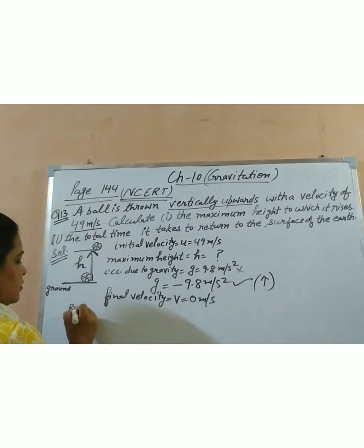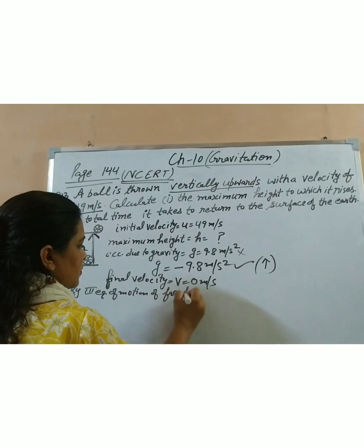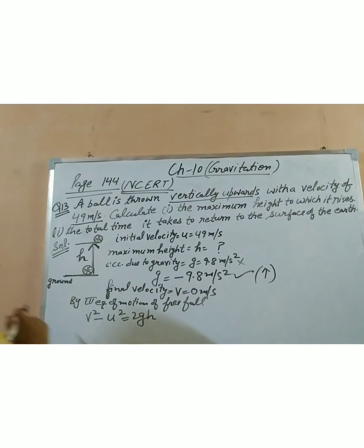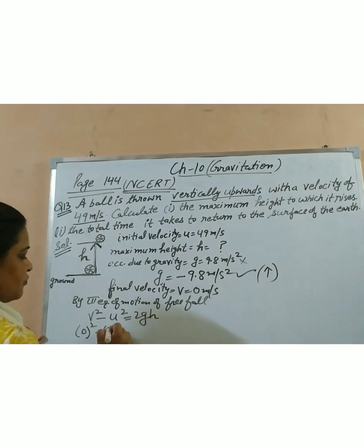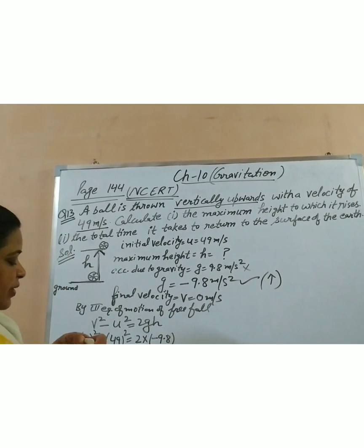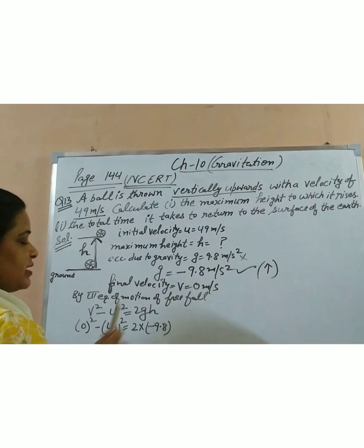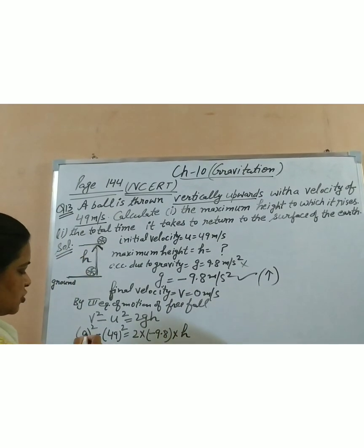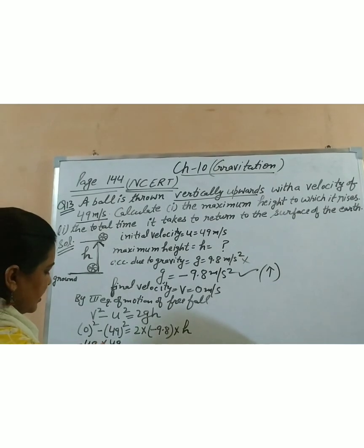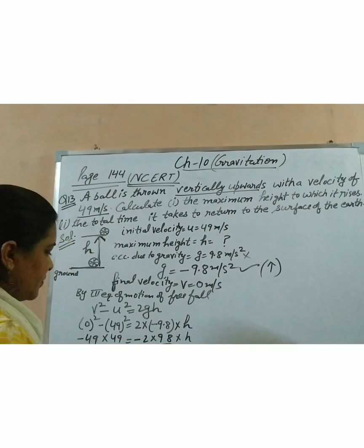By the third equation of motion for free fall: V² minus U² equals 2gH. Substituting the values: 0² minus 49² equals 2 into (minus 9.8) into H. We take minus 9.8 because when you throw the body upward its speed decreases — it is a retardation case. Solving: minus 49 × 49 equals minus 2 × 9.8 × H, and we can remove the decimal, giving minus 2 × 98 × H.